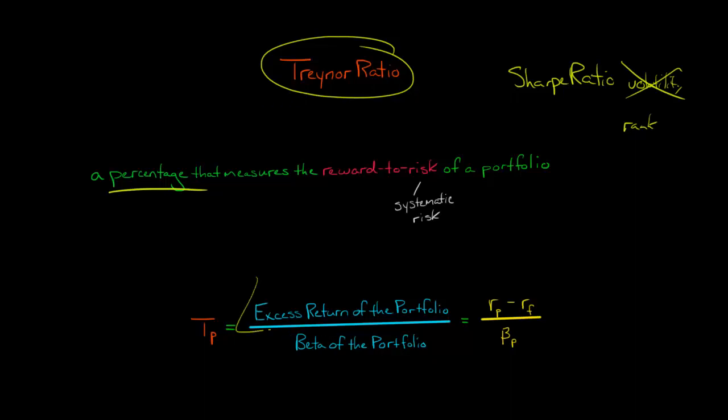We're going to look at the excess return of the portfolio, and then we're going to divide that by the beta of the portfolio. For this reason, because the Treynor ratio just focuses on systematic risk, we only want to use it if we're looking at a well-diversified portfolio where all of the non-systematic risk has already been diversified away.